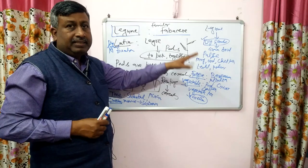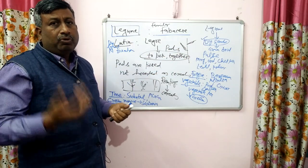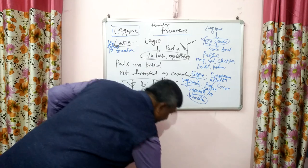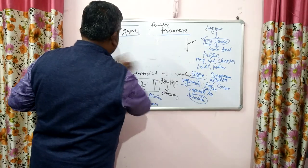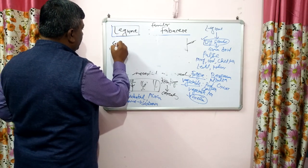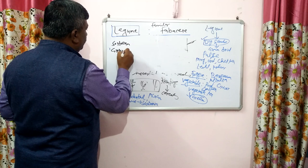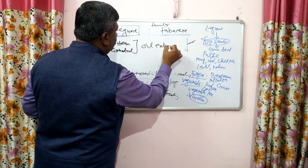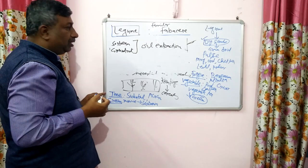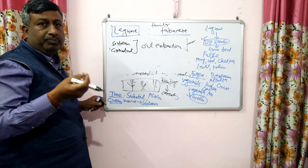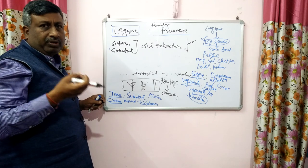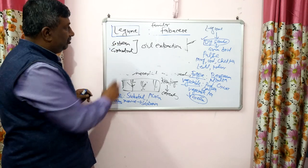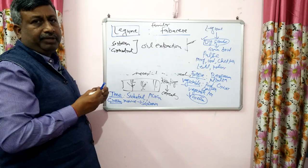Only those legumes whose dry seed is used as a food — as dal — are considered pulses. In the case of soybean and groundnut, these are legumes, but they are not considered pulses because their seeds are primarily used for oil extraction. Soybean is occasionally used like dal, but its major use is for oil extraction. So soybean and groundnut are legumes but not pulse crops — this is the key difference between legume and pulse.